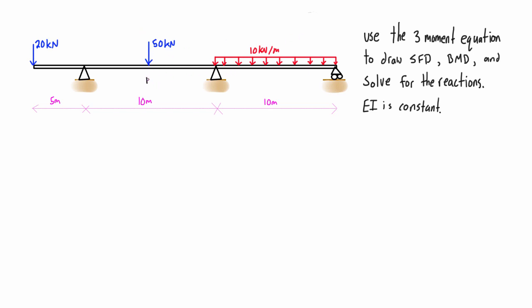The first thing that we need to do is identify that this beam has two spans. It's got span one there, span two there. In the three moment equation we're going to be calling this A, B, and C, and then it's got this little overhanging bit here as well.